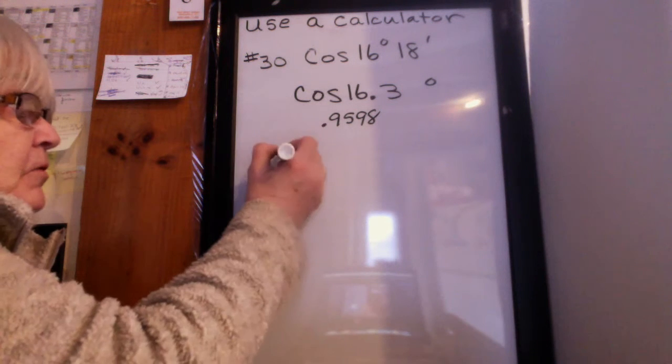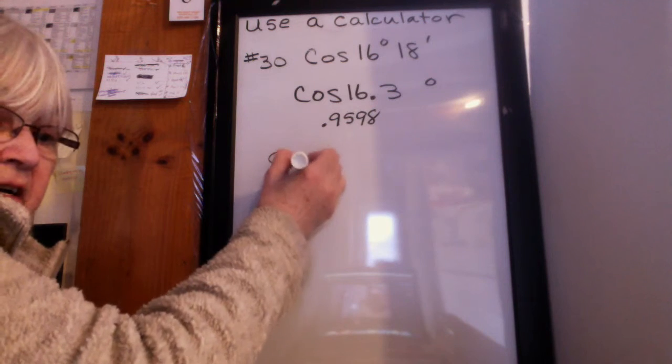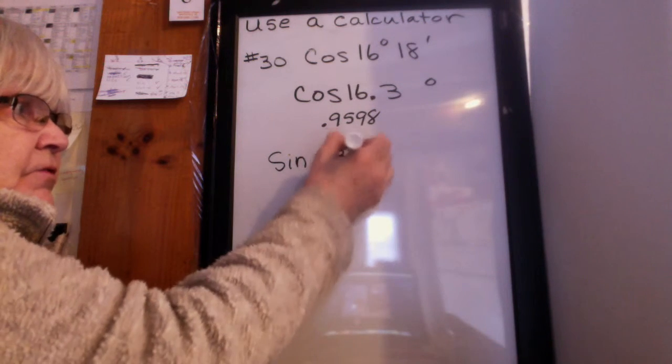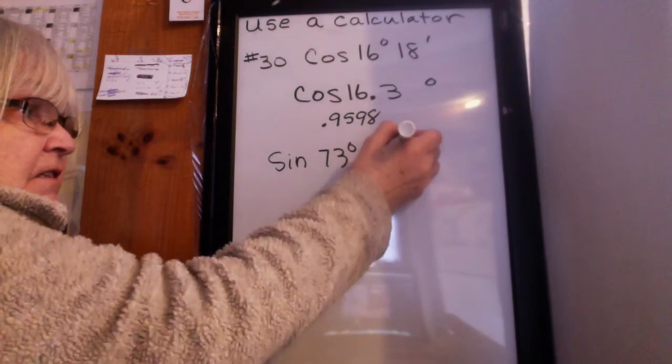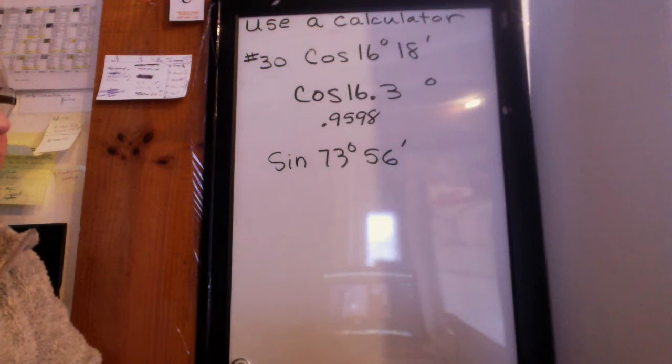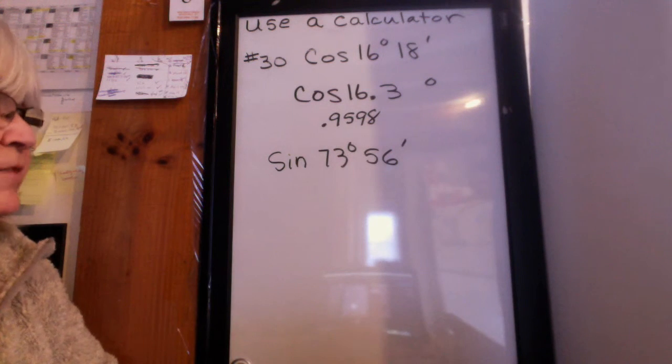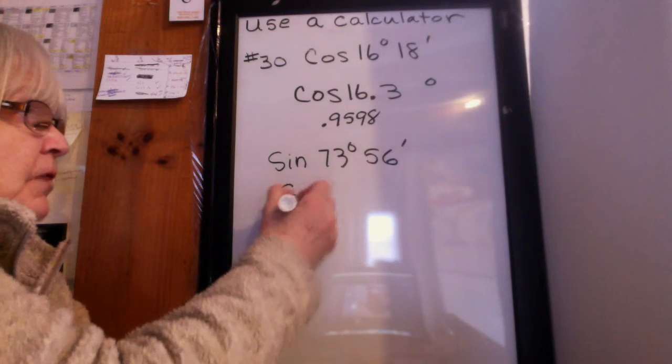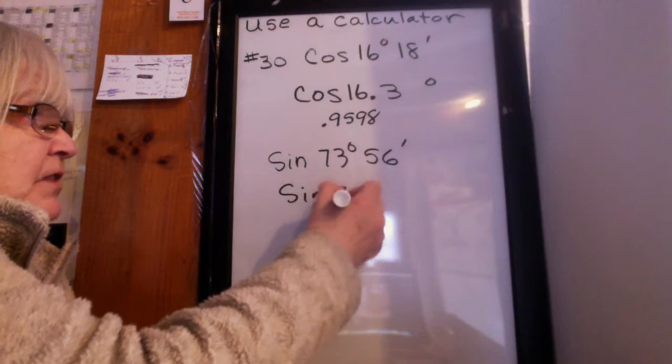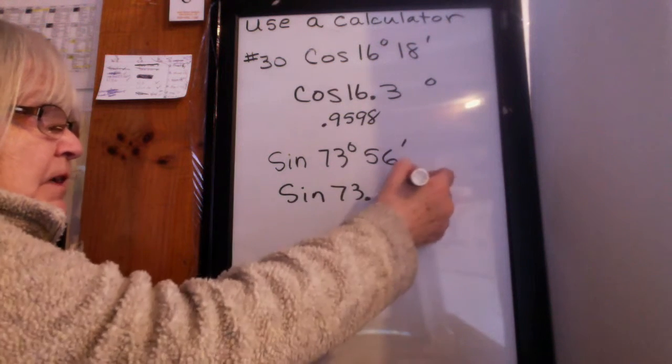Let's try another one. Suppose I want to do the sine of 73 degrees 56 minutes. What's the first thing I'm going to do? Change that to a decimal. Do you remember how? So I'm really going to do the sine of 73 point something degrees.